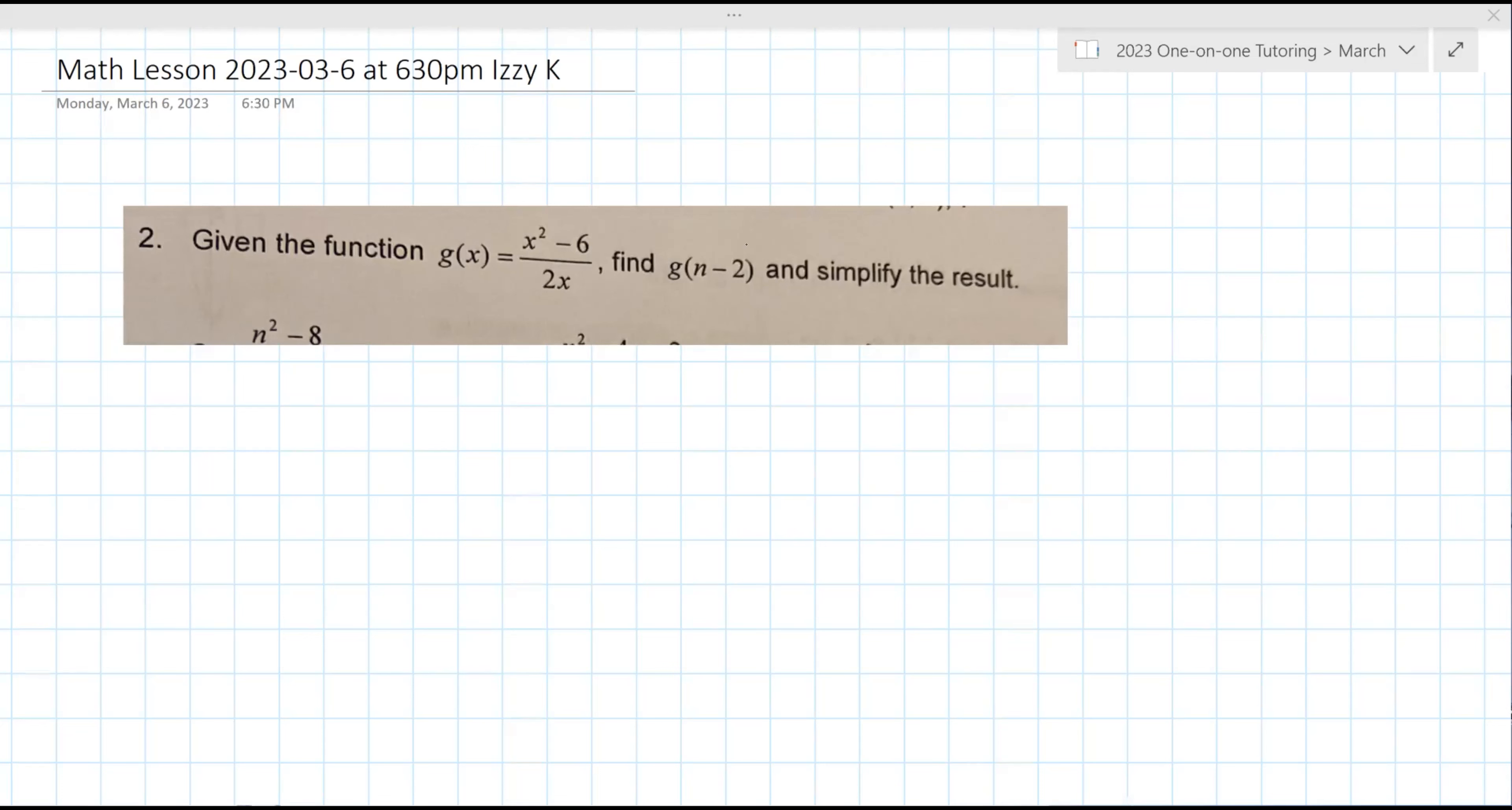Okay, so g of n minus two, that's what you're asked to calculate here. What it's saying is take n minus two and put it in wherever you see an x. So you're going to put it in there and you're going to put it in there. So it's parentheses n minus two squared minus six over two times parentheses n minus two. So again, wherever you see an x, you're going to substitute in for your answer there. Now you'll notice that none of the answers match this, so you do have to simplify.